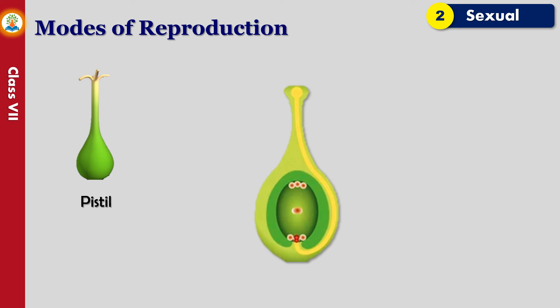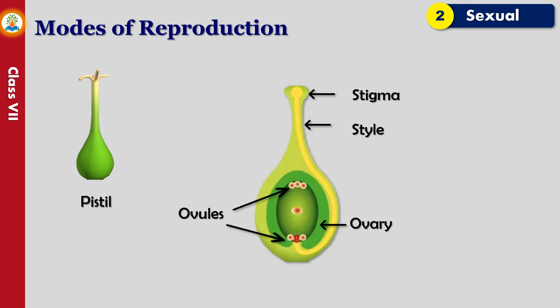The female organ pistil has three parts: ovary, style, and stigma. Stigma is a lobe-like structure connected with the ovary through a tube-like structure called the style. The ovary is the swollen part in which one to many ovules are present. The stigma provides a platform for the pollen grains to germinate.